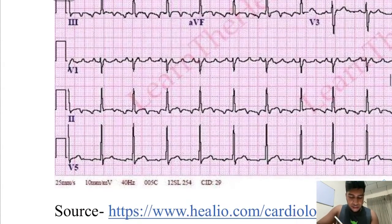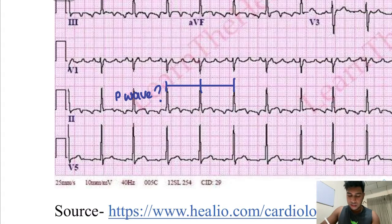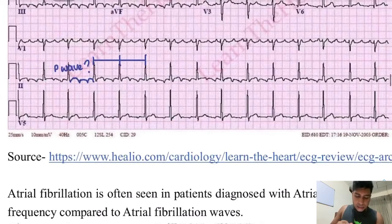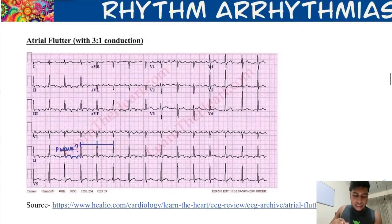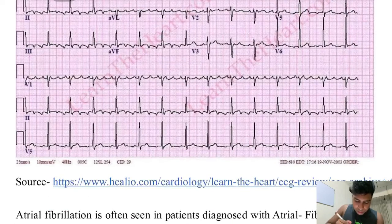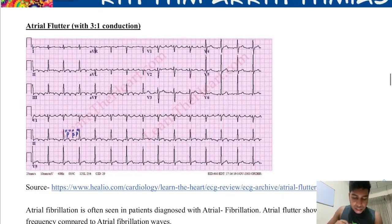Can you show me a P wave? Do you see a P wave here? No. We have a regular rate, but there's no P wave. This also has a characteristic sawtooth shape. This sawtooth shape tells us that this is an atrial flutter. You can tell there are three P waves before a QRS complex, so this is called a 3 to 1 conduction.